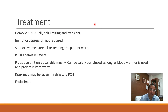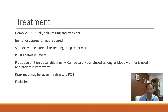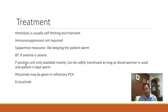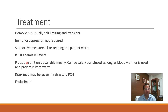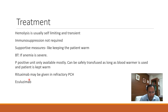Treatment of PCH: since hemolysis is usually self-limiting and transient, a watch-and-wait approach is appropriate for mild attacks. Immunosuppression is generally not required. Supportive measures like keeping the patient warm are helpful. If anemia is severe, blood transfusion may be advised. Finding P-negative units is difficult as most donors are P-positive, but P-positive units can be safely transfused as long as a blood warmer is used and the patient is kept warm. In very severe refractory cases, rituximab (anti-CD20) or eculizumab (which acts on complement, similar to its use in PNH) may be used.